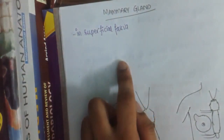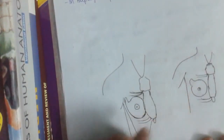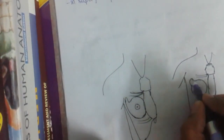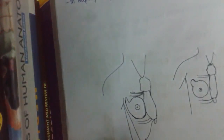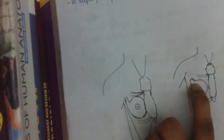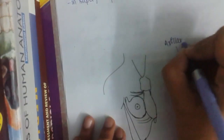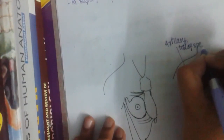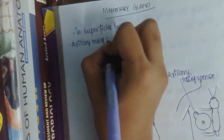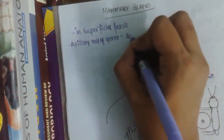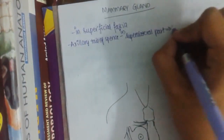The mammary gland is mainly situated in the superficial fascia. There is a small extension present in the superior lateral part called the axillary tail of Spence. This axillary tail of Spence penetrates the deep fascia.